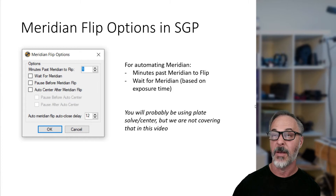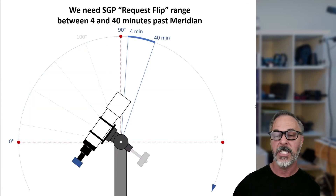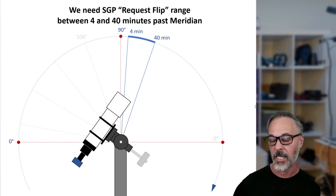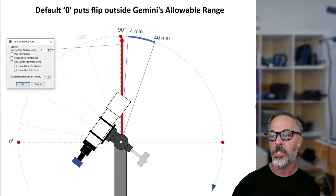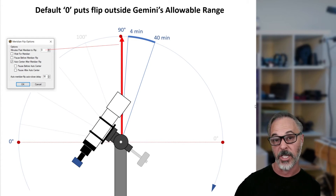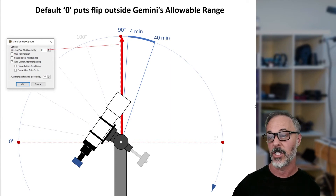As mentioned, you are almost certainly going to use plate solving if you want to automate meridian flips — so you can go to sleep and wake up with great data. Going back to our diagram: we need Sequence Generator Pro's flip request range to be between 4 and 40 minutes past the meridian. That's the allowable range defined in Gemini, with about a minute of padding. The problem with leaving the default value of 0 minutes past the meridian is that the requested flip time would fall outside Gemini's allowable range and the flip will fail. So we need minutes past meridian to flip to be greater than 4 minutes.